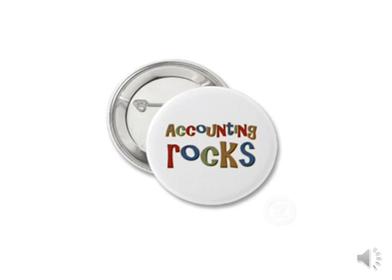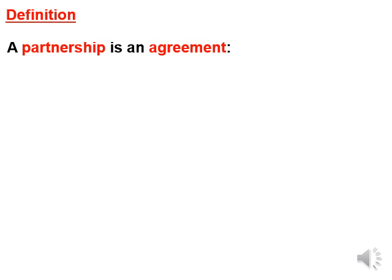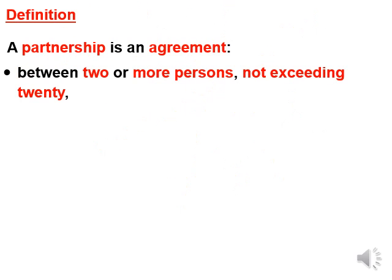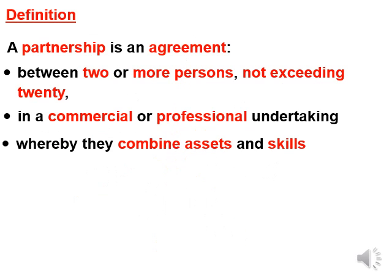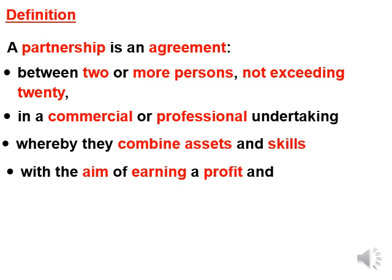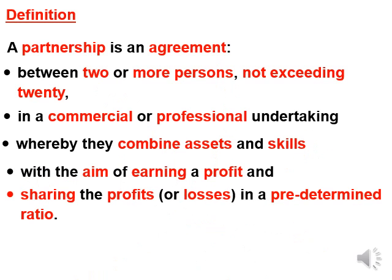Today we start with a new topic: partnerships as a form of ownership. You have already dealt with the sole trader, so we're going to start with a partnership. The definition: a partnership is an agreement between two or more persons, not exceeding 20, in a commercial or professional undertaking, whereby they combine assets and skills with the aim of earning a profit and then sharing the profit or losses in a predetermined ratio.